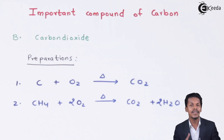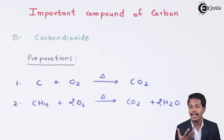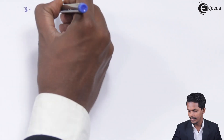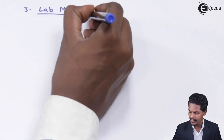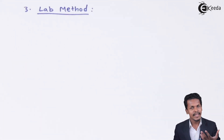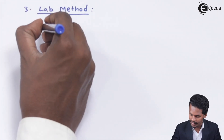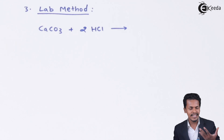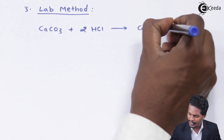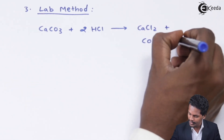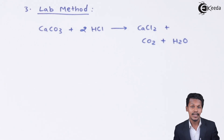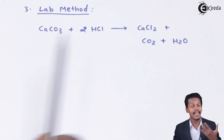There are also other methods — a commercial method as well as the lab method — from which we can obtain CO2. In the lab method, we take calcium carbonate (CaCO3) and treat it with 2 moles of HCl, so as to obtain the calcium salt CaCl2 along with CO2 and H2O. CO2 is obtained here, and this is our main concern in terms of the preparation of carbon dioxide.